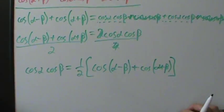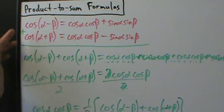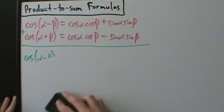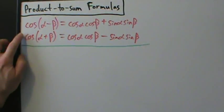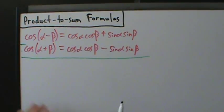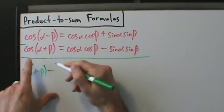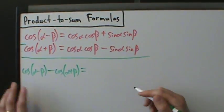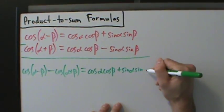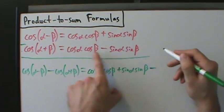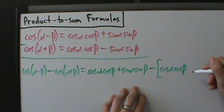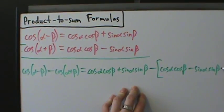Now to get the second formula, instead of adding the two cosine equations we're going to subtract them — first equation minus the second equation. On the left-hand side we get cos(α − β) − cos(α + β). On the right: cos α cos β + sin α sin β, minus the entire second right-hand side — so be very careful — minus (cos α cos β − sin α sin β).